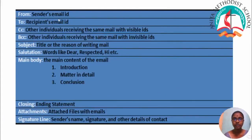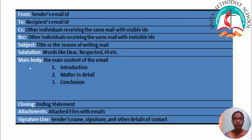From: sender's email ID. To: recipient's email ID. CC: other individuals receiving the same mail. BCC: other individuals receiving the same mail with invisible IDs. Subject: the title or the reason for writing the mail. Salutation: words like dear, respected, hi, etc. Main body: the main content of the email, including introduction, matter in detail, and conclusion.